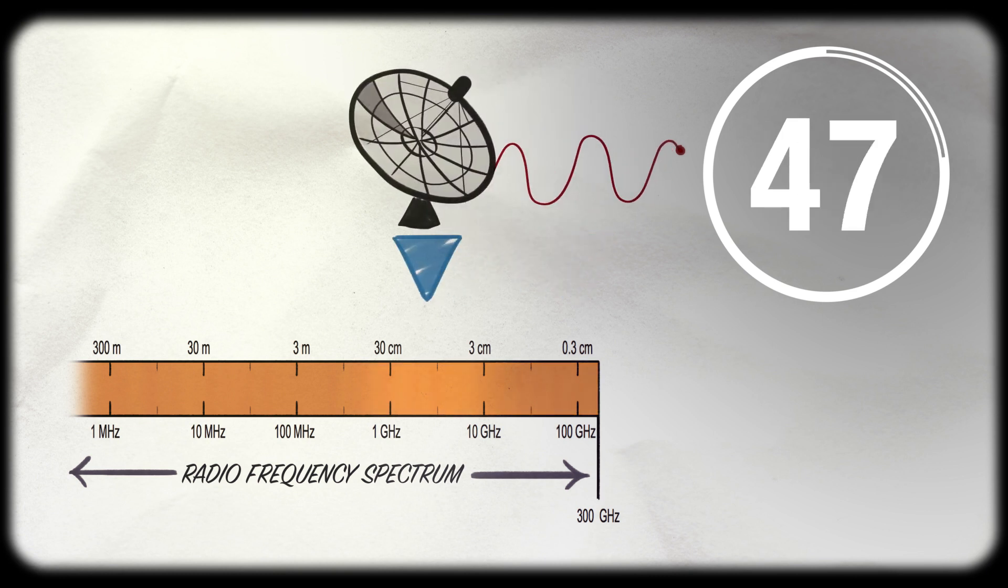The mid band spectrum are so-called Goldilocks frequencies such as the C band. They have the right combination of both properties, but it's in short supply.